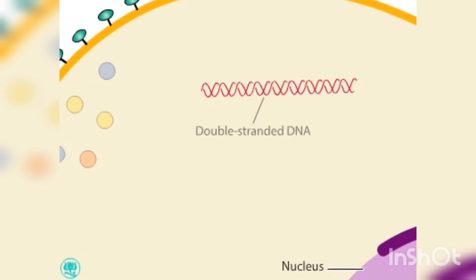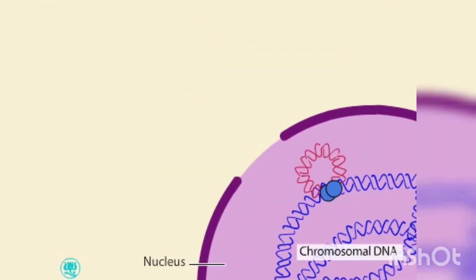The double-stranded viral DNA enters the nucleus with several types of viral proteins, including an enzyme called integrase. Integrase enzymes splice the viral DNA into the host cell's chromosomal DNA. The integrated viral DNA is known as a provirus.